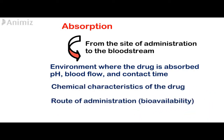The rate of absorption will depend on three main factors. The first one is the environment where the drug is absorbed. It will be different if it is absorbed from the stomach or from the small intestine, as it will depend on the pH of the stomach or the intestine. Also the blood flow to that place it is absorbed from, and the contact time — how long it has stayed in the stomach or the intestines.